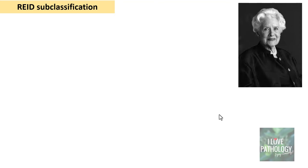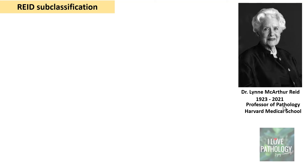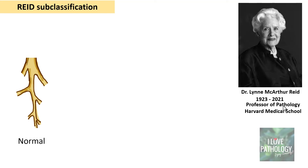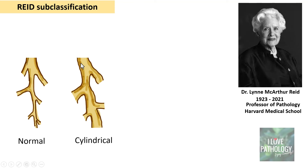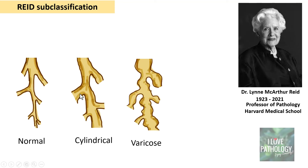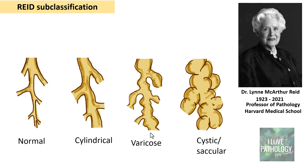Another important feature is how the bronchi and bronchioles are dilated, which leads to understanding the Reid subclassification of bronchiectasis. Dr. Reid was a renowned pathologist who, as a senior resident working in an Australian medical school, described the pathologic features of the lung in bronchiectasis. She subclassified based on the type of dilatation into three categories: uniform dilatation is called cylindrical type, irregular dilatation is called varicose type, and very large cystic or saccular dilatation is referred to as saccular type.